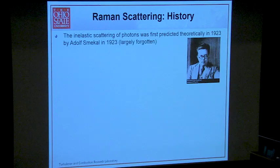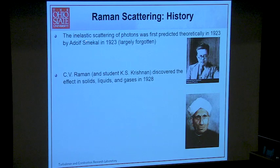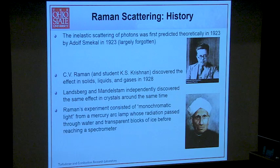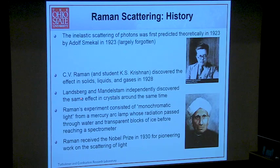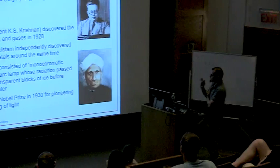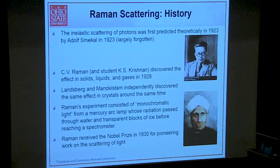A little bit of history. The Raman effect was first predicted theoretically by Adolf Smekal in 1923 — largely forgotten. But in 1928, Raman discovered this effect and ultimately won the Nobel Prize two years later, which tells you how influential the effect was at the time. This kind of inelastic scattering of photons was also independently discovered by Mandelstam and Landsberg in crystals around the same time. Raman's experiment used monochromatic light from a lamp passed through water and ice to observe this inelastic effect.